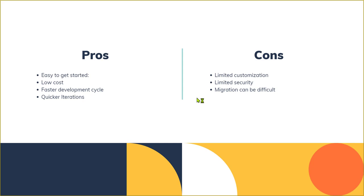Another thing we love about NoCode is that you can make very quick iterations — you can make changes super fast. If you were coding and wanted to make changes, you'd call your developer, hold a stand-up meeting, and it might take weeks to push a new build to the app store. But with NoCode, you can make those changes within a few hours and push it to the Play Store, because you're not writing code manually.